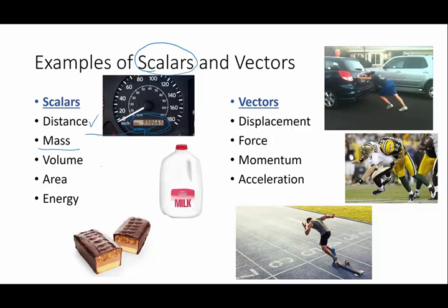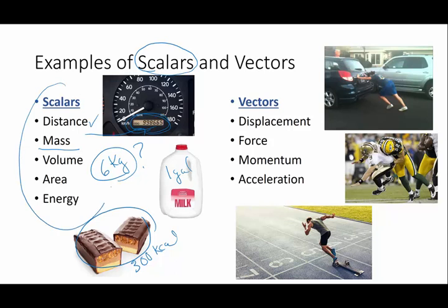Mass. If I say my cat has a mass of 6 kilograms, that would be silly to say my cat has a mass of 6 kilograms west. That would be just plain kind of goofy and wouldn't sound right. Volume. A gallon of milk. Energy. Maybe I've got 300 kilocalories of energy in this candy bar. It would not make any logical sense to say that's up, down, north, or south. So there's an awful lot of quantities that we measure without direction.